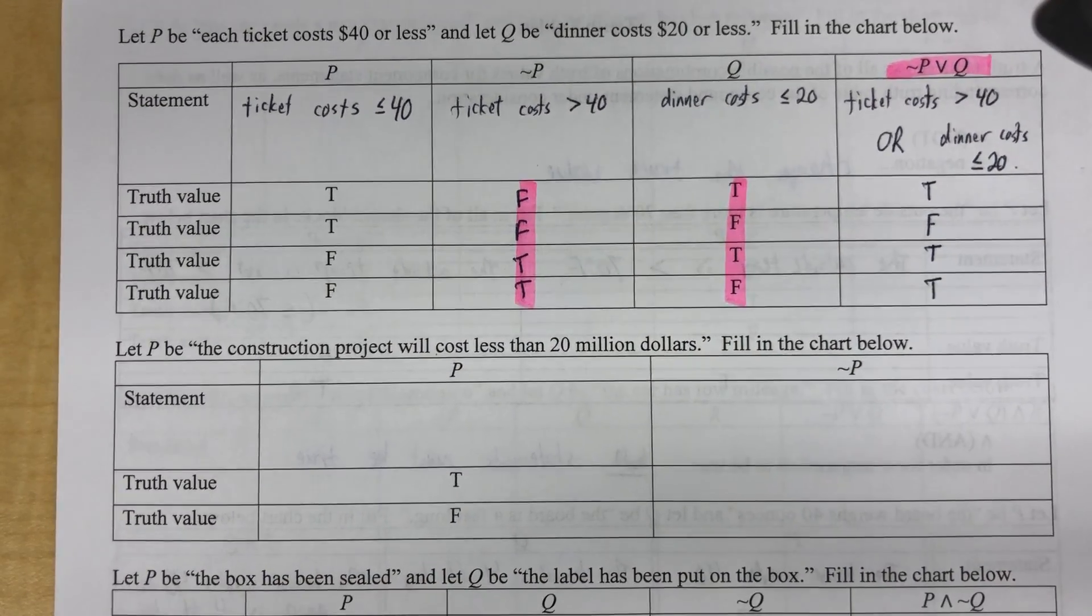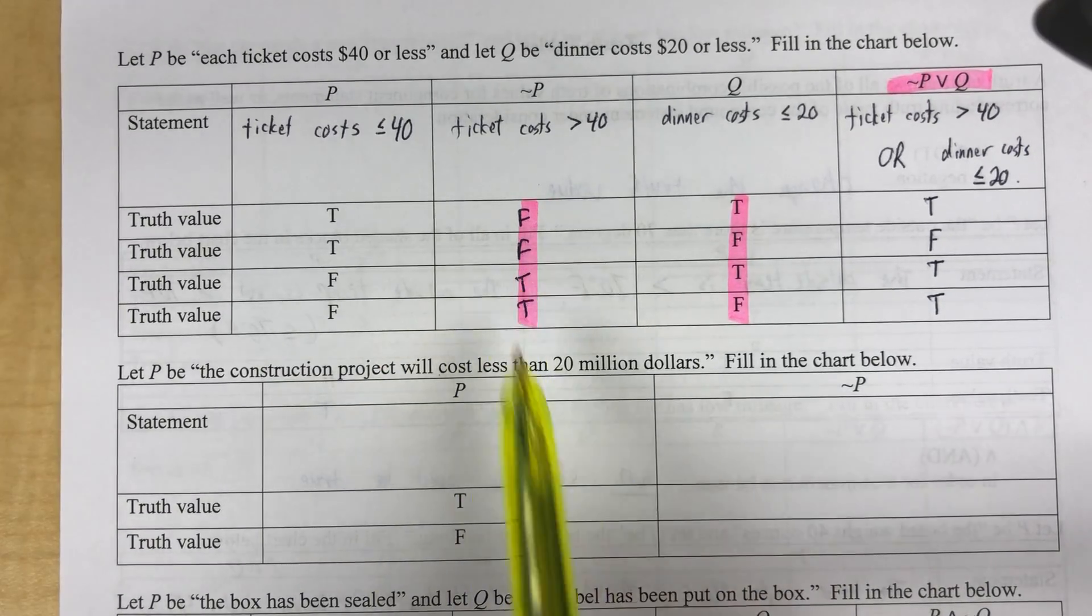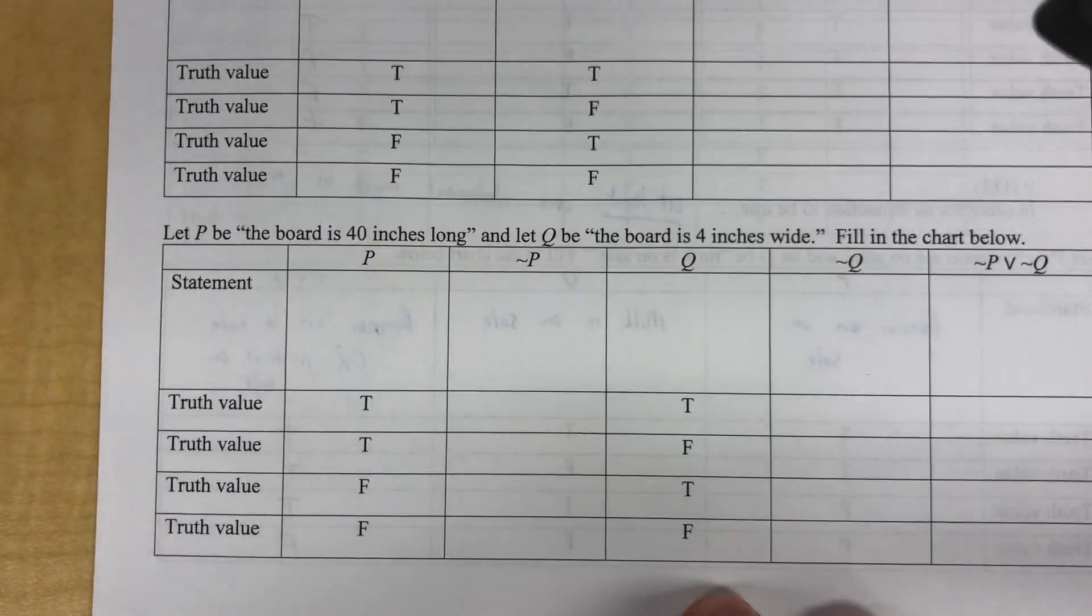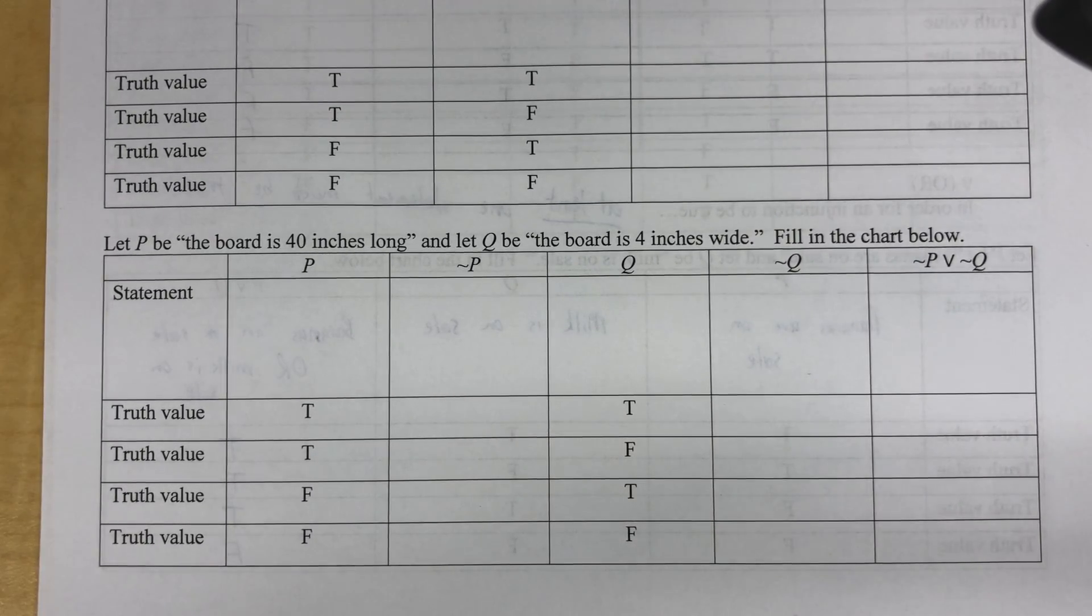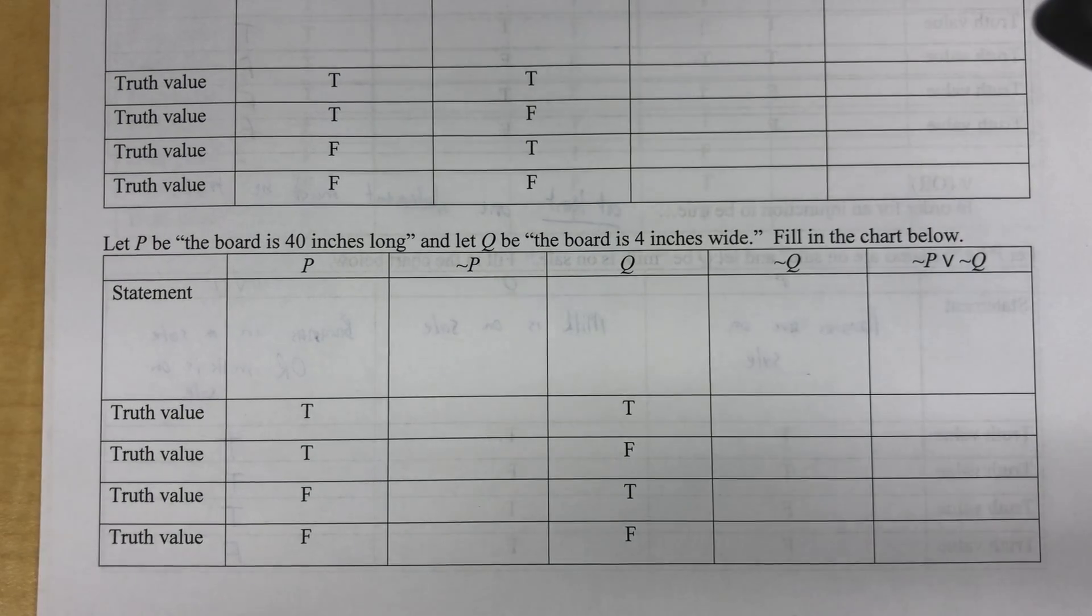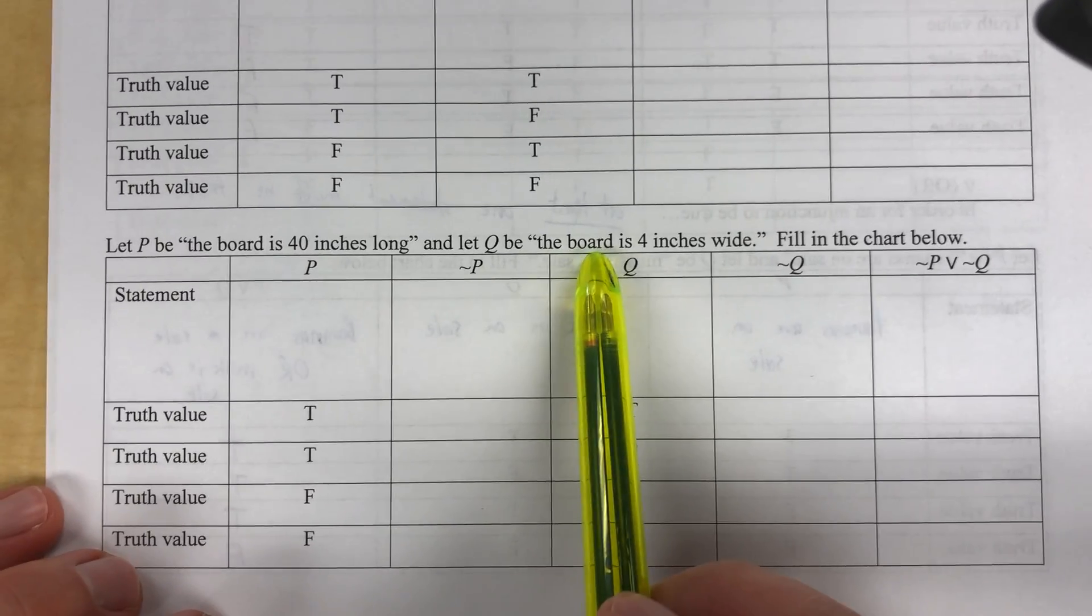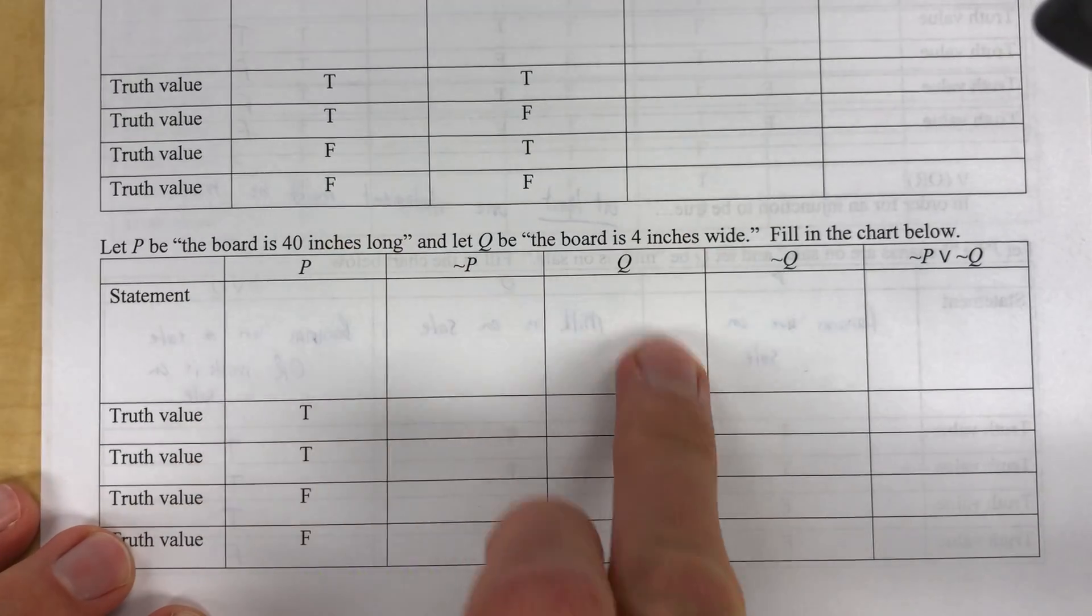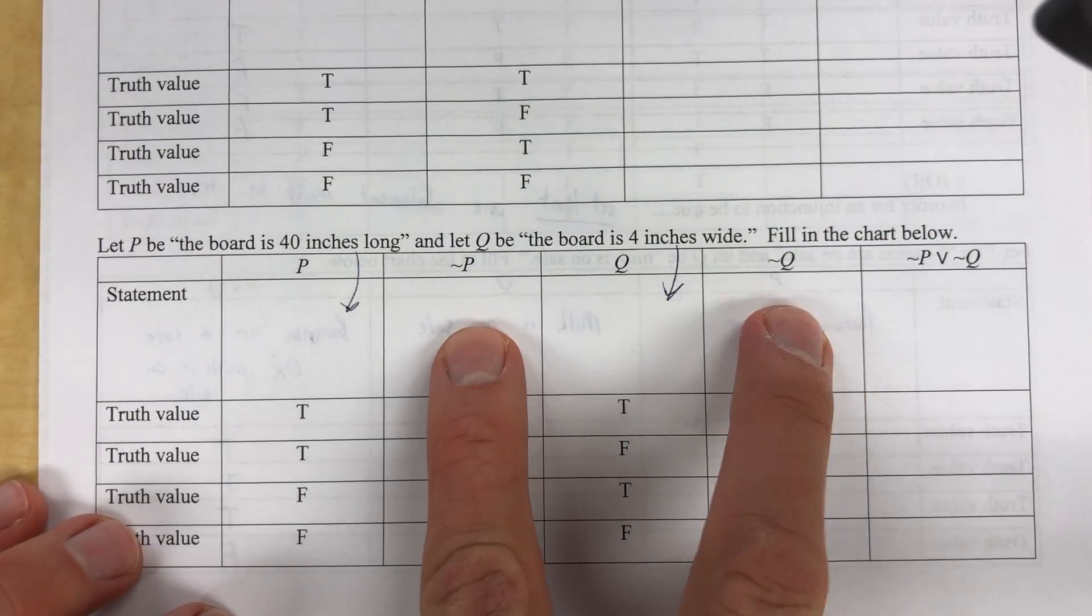All right. So I'm going to skip the next problem because it's a little bit more straightforward. It's basically like what you just did here, only it's like one column. And I'm going to go to a crazy one down here. And we'll do this one and then one that is super crazy before we go into problems that go a little bit faster. So here goes. We're working at the lumber yard. Again, the board is 40 inches long. Q is the board is four inches wide.